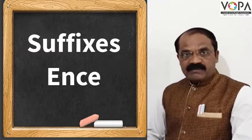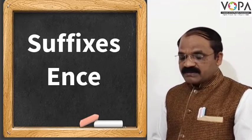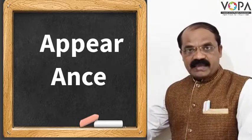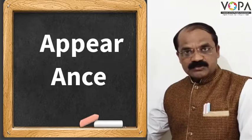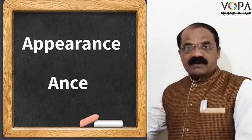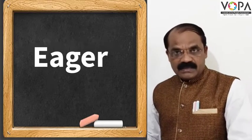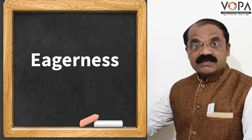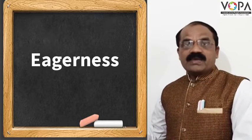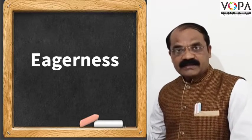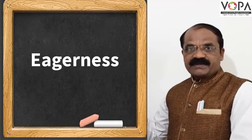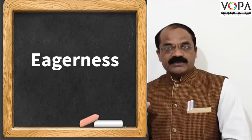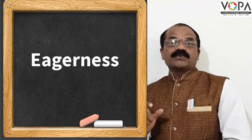One more example: the word 'appear' — if we add the suffix '-ance' we get 'appearance.' Another word is 'eager' — if we add '-ness' to the main word we get 'eagerness.' So when we add all these suffixes to the main words, we get new words.